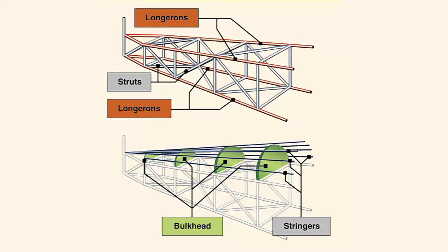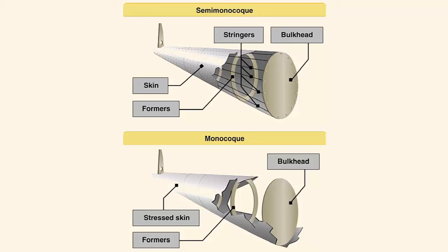Many older aircraft designs utilize an open truss structure constructed of wood, steel, or aluminum tubing. The most common types of fuselage structures used in today's aircraft are the monocoque, which is French for single shell, and semi-monocoque designs. We'll talk about these design structures in a later video.